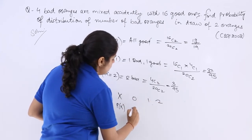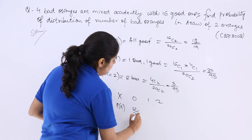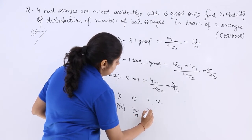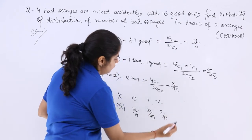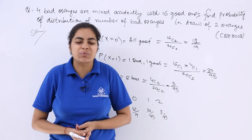0, 1, 2. Then it is 12 over 19, 32 over 95, 3 over 95. So this is the answer to this question.